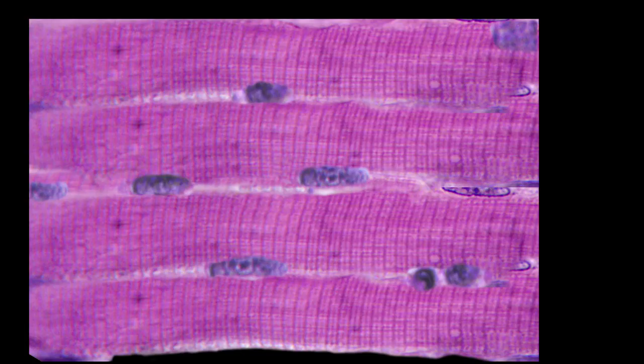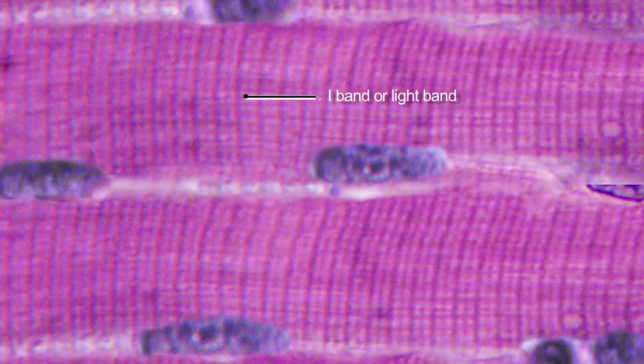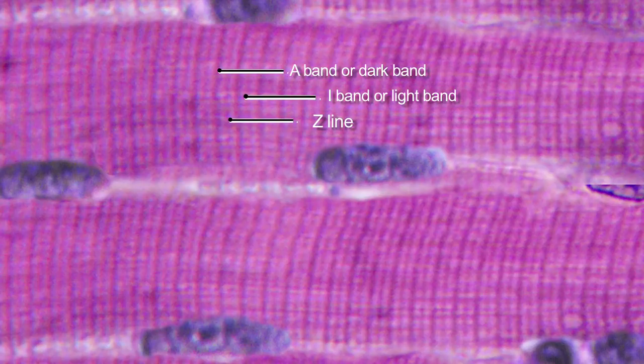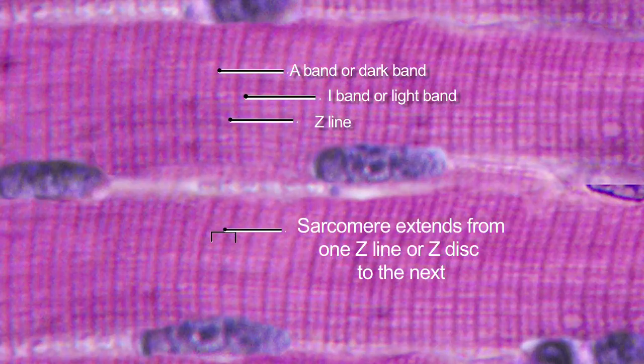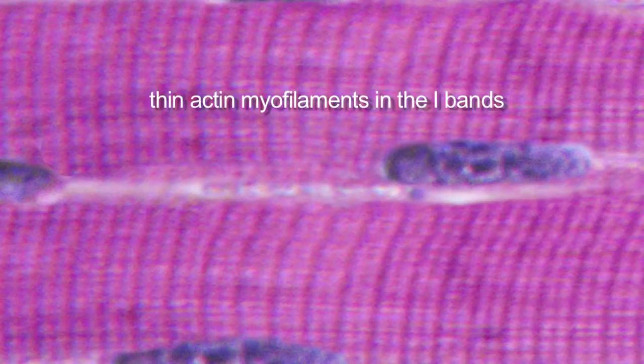Skeletal muscle is striated, and this is clearly seen in this muscle section, where light or I bands and dark or A bands are evident. The I bands are bisected by the Z-line or Z-disc. The contractile element of a muscle fibre is the sarcomere, and a sarcomere extends from one Z-line to the next. The muscle fibres are composed of two types of myofilaments: thin actin myofilaments in the I bands, and thick myosin myofilaments in the A bands.